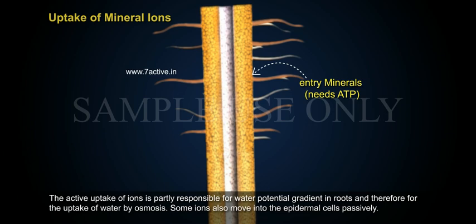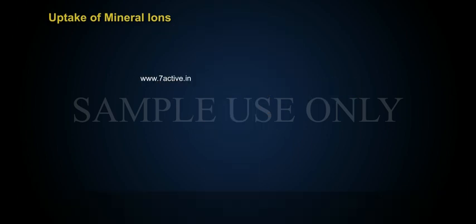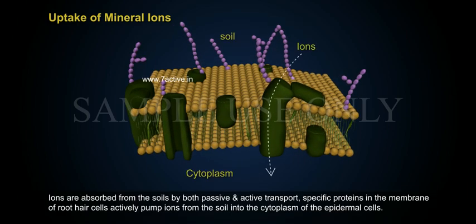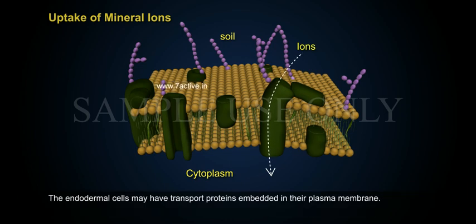The active uptake of ions is partly responsible for the water potential gradient in roots, and therefore for the uptake of water by osmosis. Some ions are absorbed from the soil by both passive and active transport. Specific proteins in the membrane of root hair cells actively pump ions from the soil into the cytoplasm of the epidermal cells. The endodermal cells may also have transport proteins embedded in the plasma membrane.